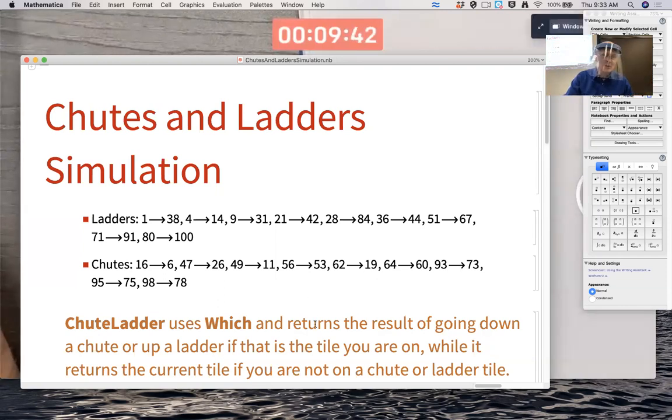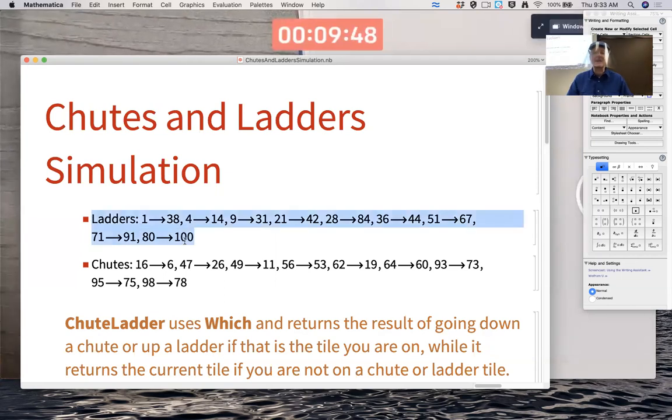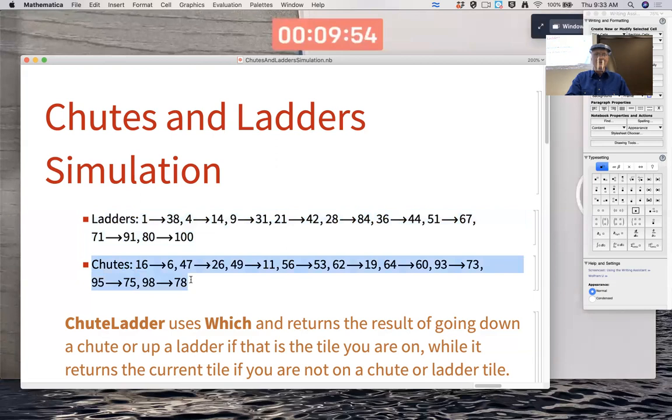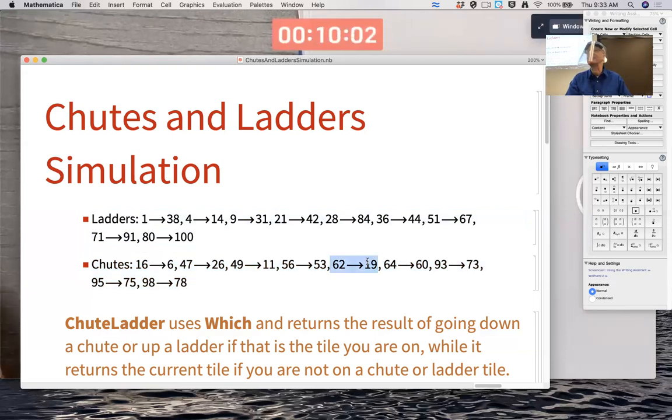Well, you do have to keep track of where they are. So the first ladder goes from spot one to spot 38, then the second one from four to 14, the third one from nine to 31, et cetera. And the chutes go down, 16 goes down to six, 47 goes down to 26. The really bad one is 62 goes way down to 19. That's when you really do something bad.